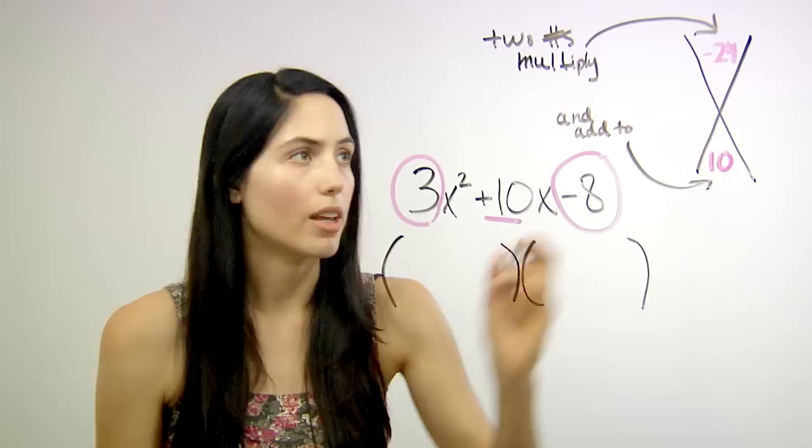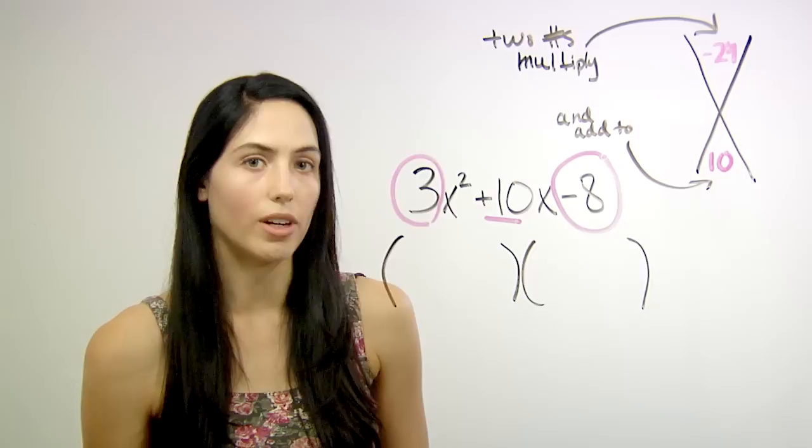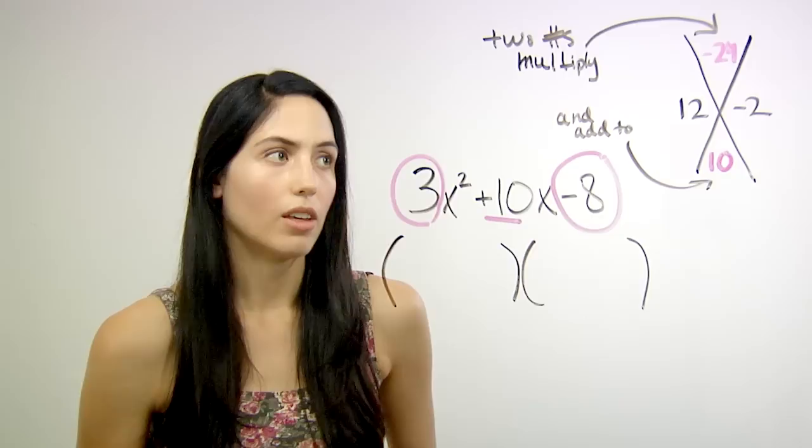Then you can list pairs, and you'll find that 12 and negative 2 are your two numbers. Because 12 and negative 2 multiply to give you negative 24, and 12 plus negative 2 gives you 10.